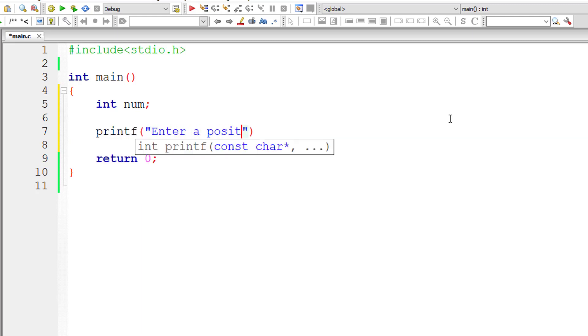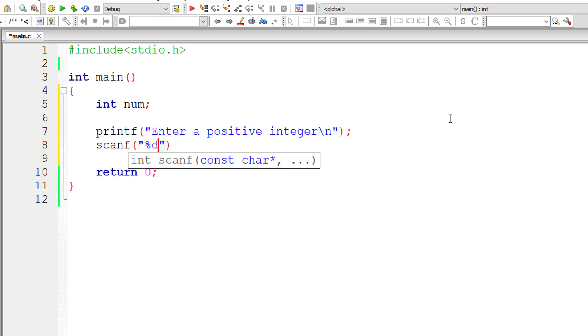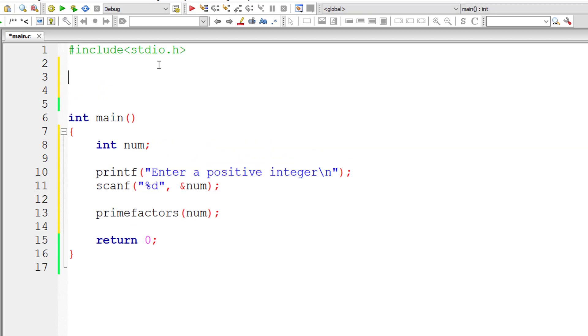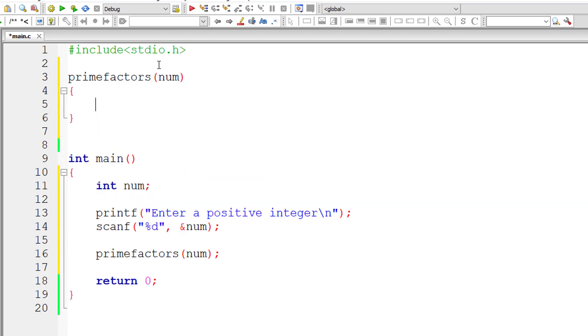So let me write the C program now. I'll take an integer variable called num. I'll ask the user to enter a positive integer and store it inside the address of integer variable num. Now let me directly call a method prime factors and pass the user entered number. Let me directly define this function prime factors. Since I am writing the definition before my main function, I need not specify the prototype. Our method doesn't return anything. So the return type is void. I'll take an integer variable as input here, which is num, which is local variable to prime factors function.